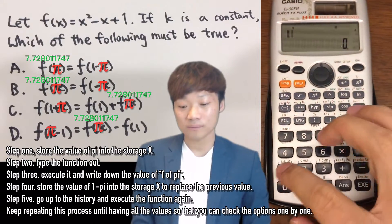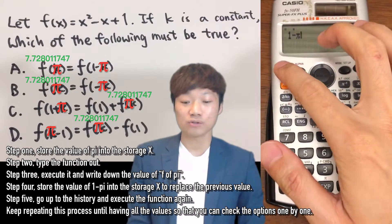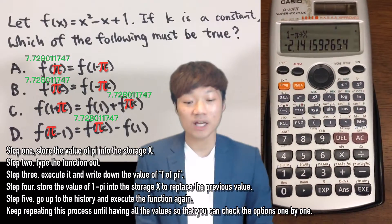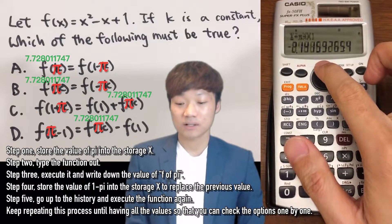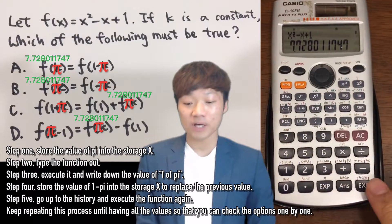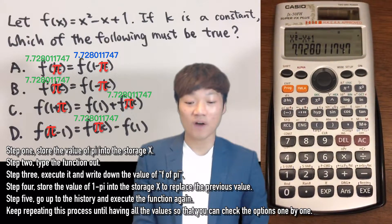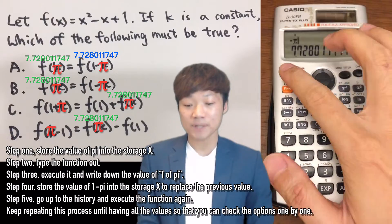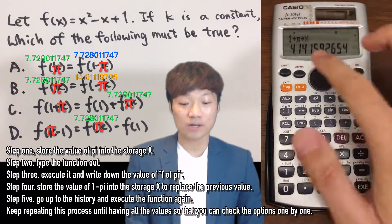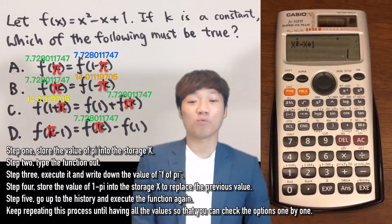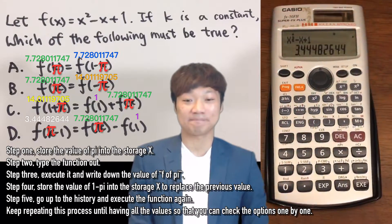Step 4: Store the value of 1-pi into the storage to replace the previous value. Step 5: Go up to the history and execute the function again. Keep repeating this process until having all the values so that you can check the options one by one.